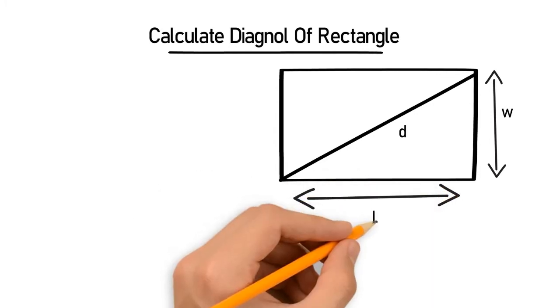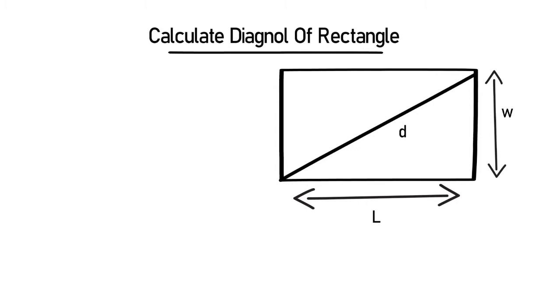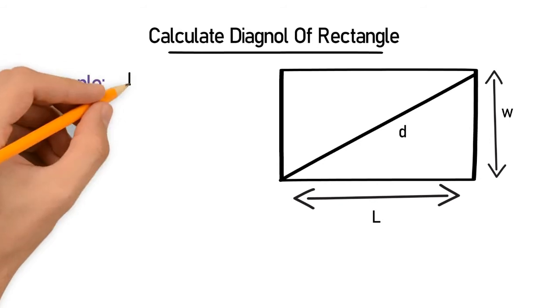So we will suppose the length of the rectangle in this example. Length is equal to 100 meters, width is equal to 50 meters.